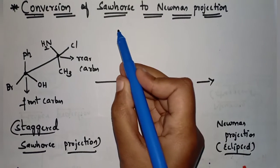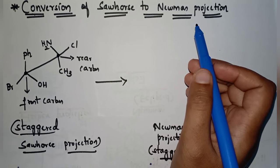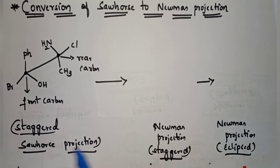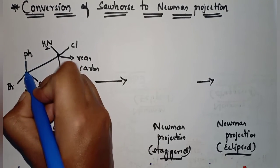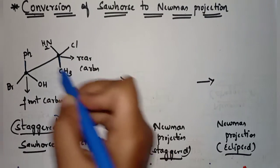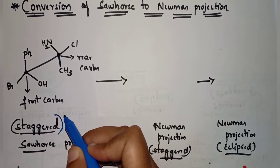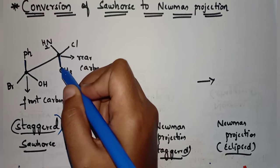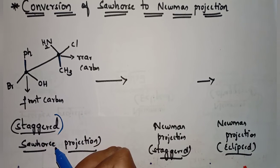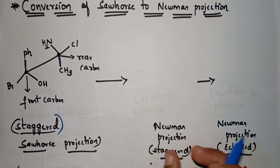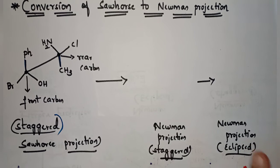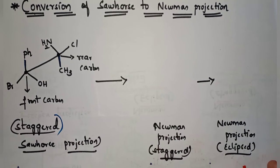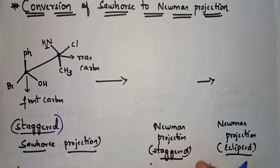In this video we are going to convert a sawhorse projection into a Newman projection. In this example, the sawhorse projection is in the staggered form — one group is pointing upward and one is pointing downward. If both are pointing upward or both pointing downward, it is eclipsed. Since it is staggered, we will first convert it into a Newman projection staggered form, then convert that into Newman projection eclipsed form.